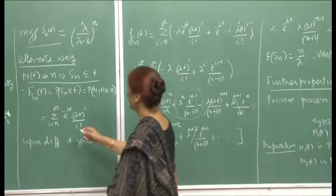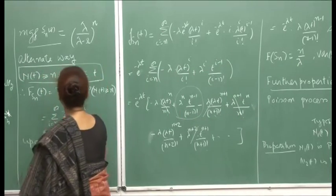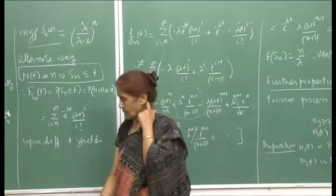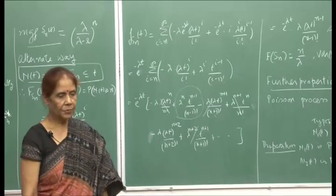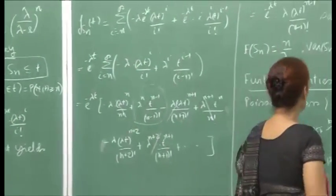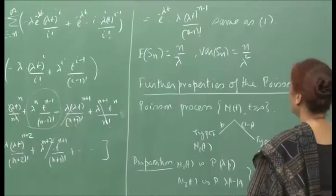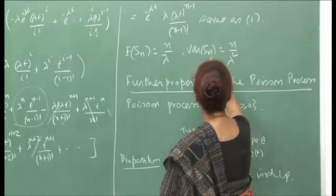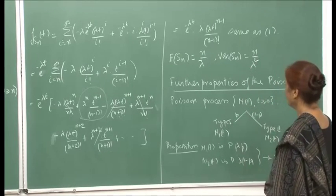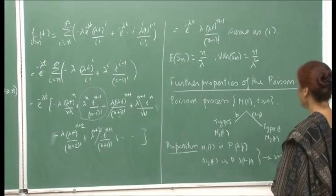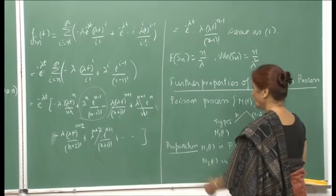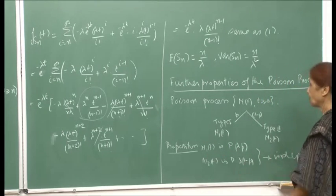This alternate derivation shows the value of having multiple tools — proving results by more than one method gives better insight. The expected value of S_n is n/λ and the variance of S_n is n/λ². We will now prove further properties of the Poisson process and work out examples.